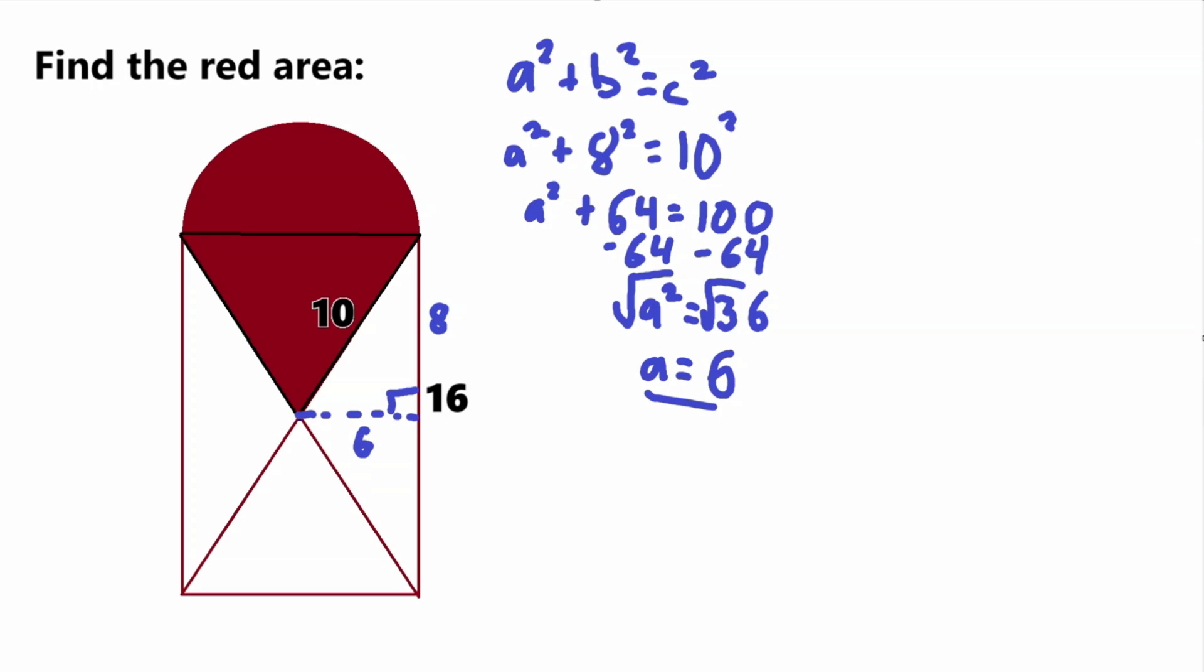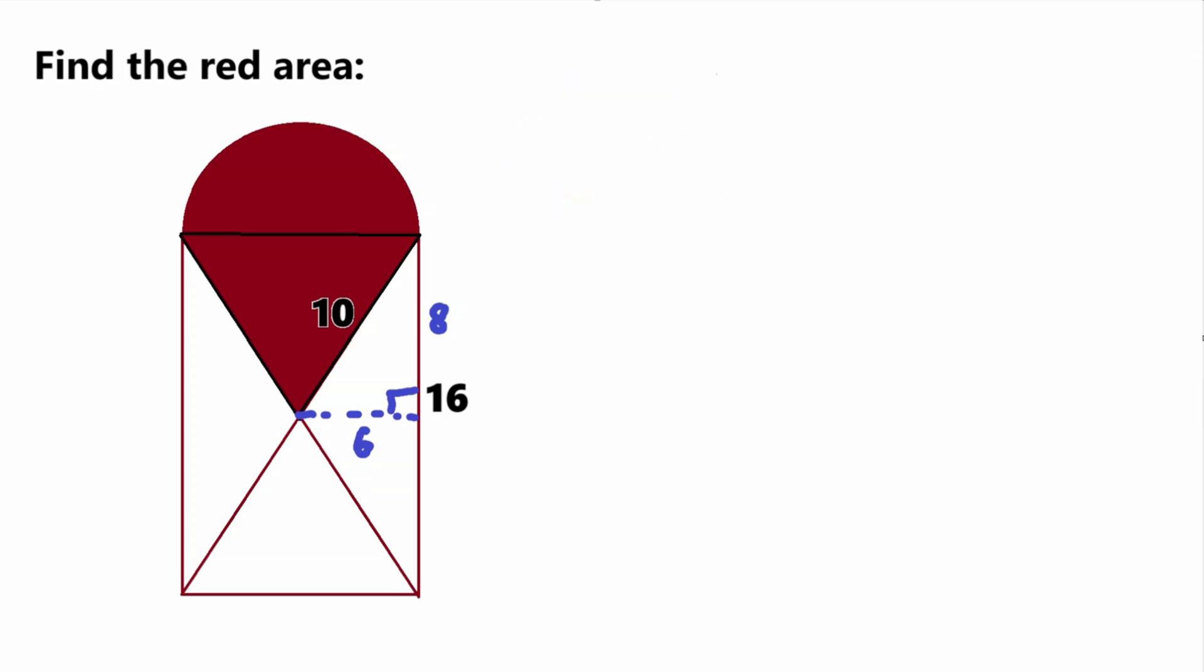So we found that value. Now we found that this value is 6, but what can we do with this value? First thing that we can do is that this value, this side length goes from the middle of the circle to the edge. So that is the radius of this circle, or half semicircle. Since we have the radius, we can figure out the area of the semicircle.